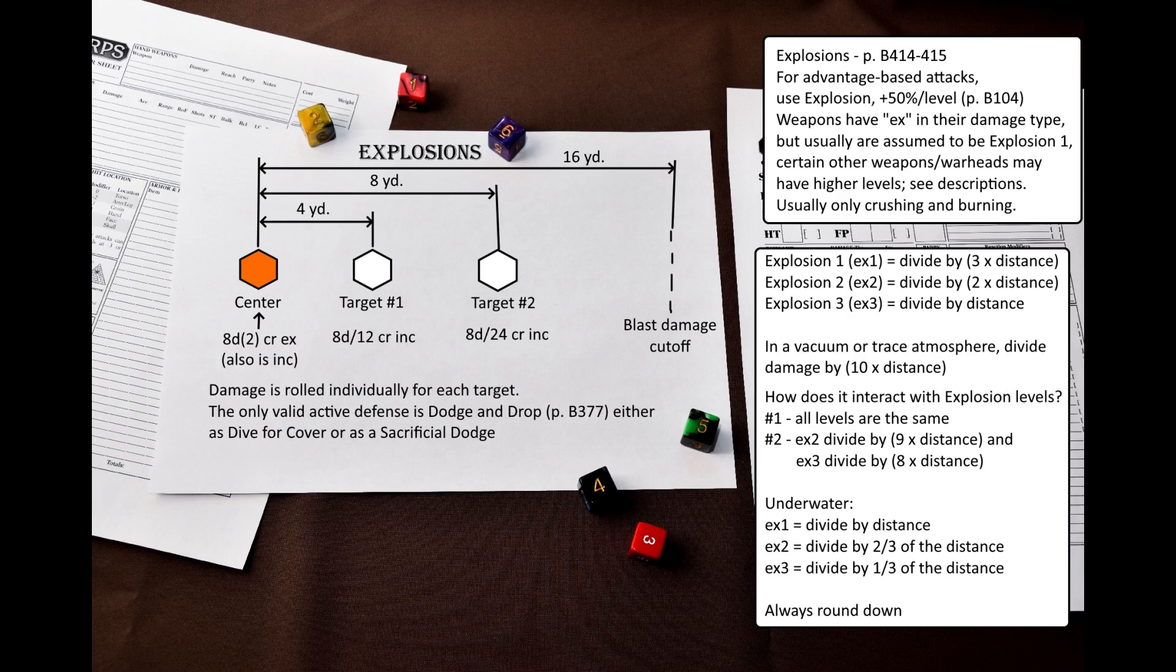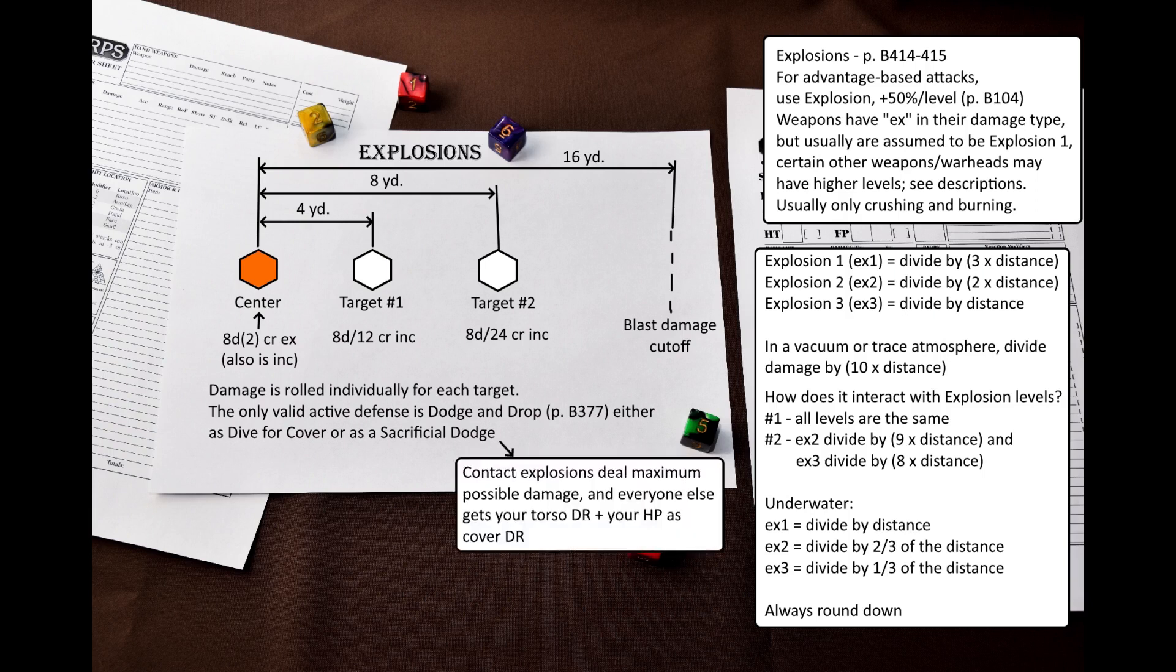You can defend against explosion damage, but only by doing a dodge and drop. Usually that means diving for cover, but you can also dive onto a grenade as a sacrificial dodge to save your friends. In such cases the explosion becomes a contact explosion, and you take maximum possible damage, and everyone else gets your torso DR plus your HP as cover DR.